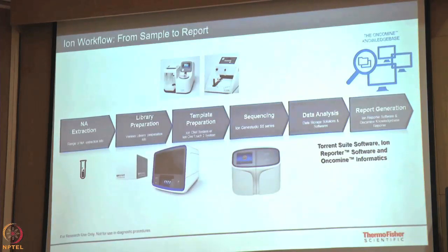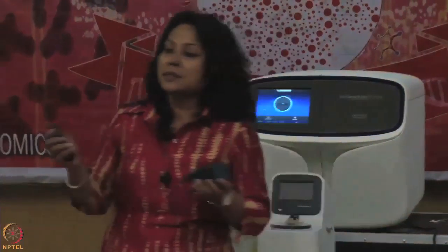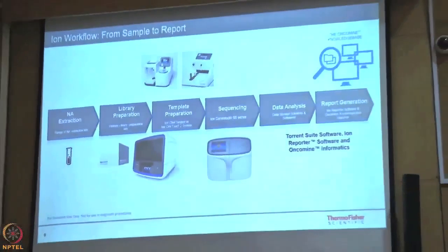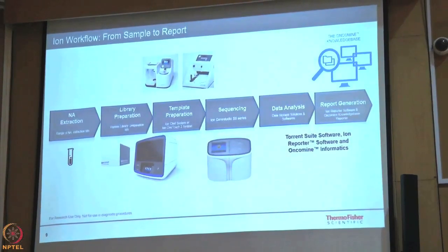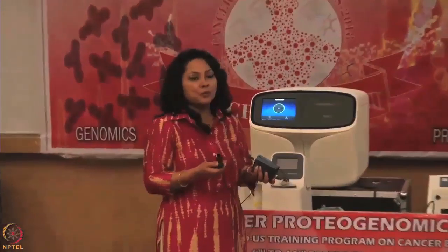In library preparation, you shear the genome — either by enzymatic or mechanical shearing — breaking it down into small pieces, then you ligate adapters. These are double-stranded fragments ligated on both ends, breaking down the genome of interest into smaller parts and ligating them with adapters. The sequence of these adapters is known, so a primer can sit and sequence the region in between.